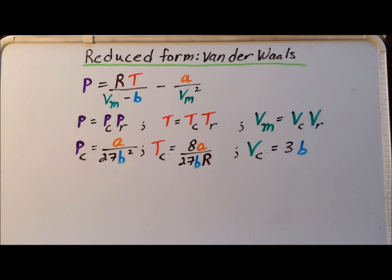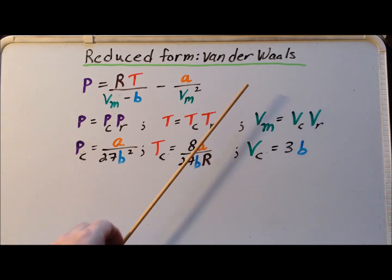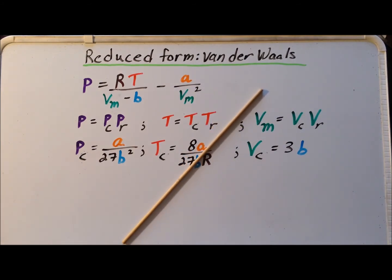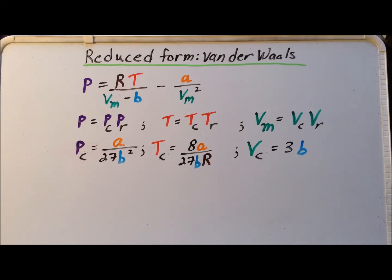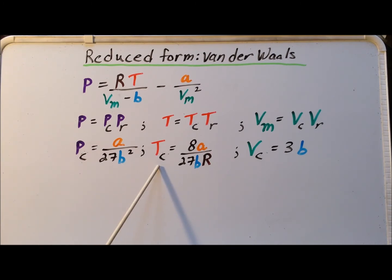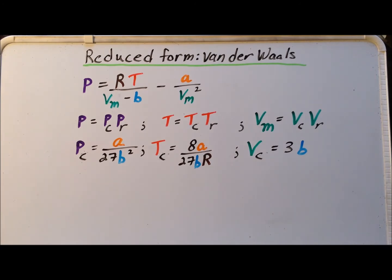For reference, we list the values of the critical constants for the van der Waals gas. If you do not know where these come from, you can see a derivation in this video. p sub c is the critical pressure, t sub c is the critical temperature, and v sub c is the critical molar volume for the van der Waals gas.